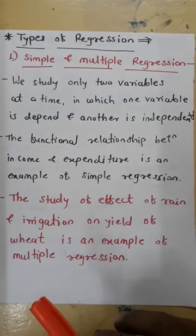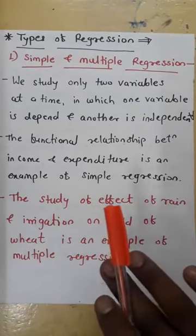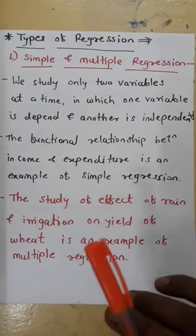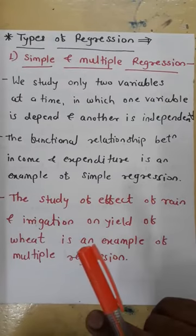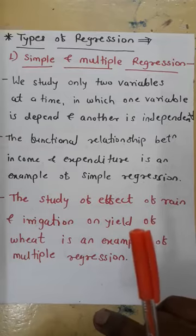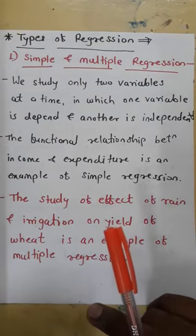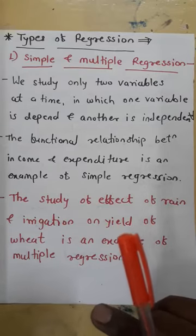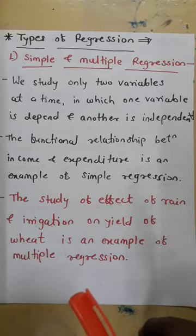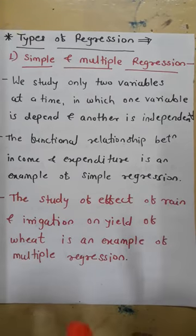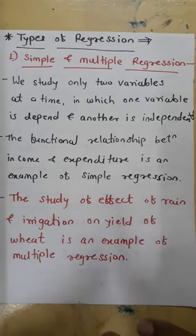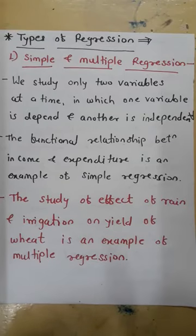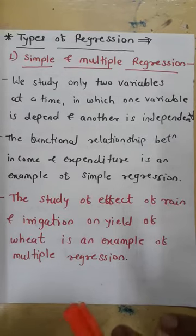The first type is simple and multiple regression. In simple regression, we study only two variables at a time, in which one variable is dependent and another is independent. We study and compare two variables or two quantities. The correlation — the relation between both variables — is found out at a time. That is called simple regression.